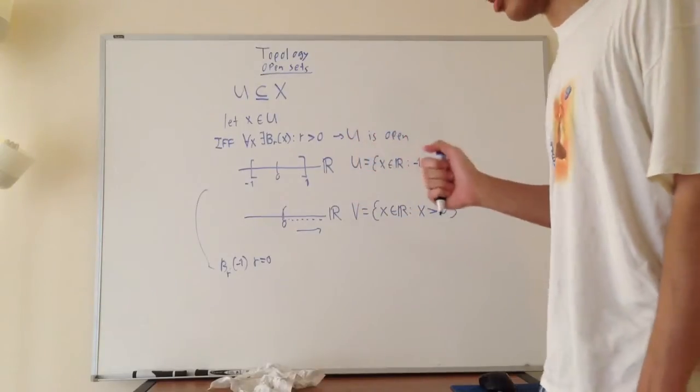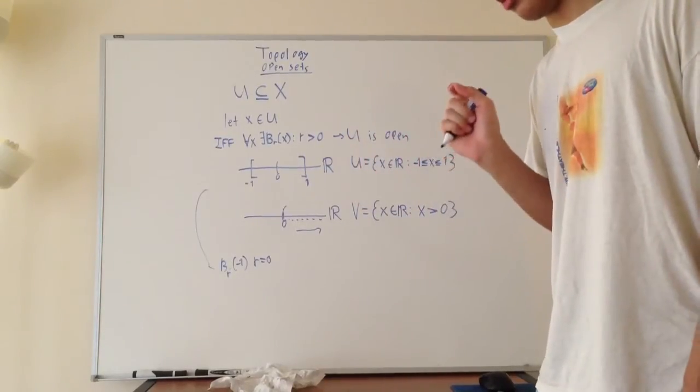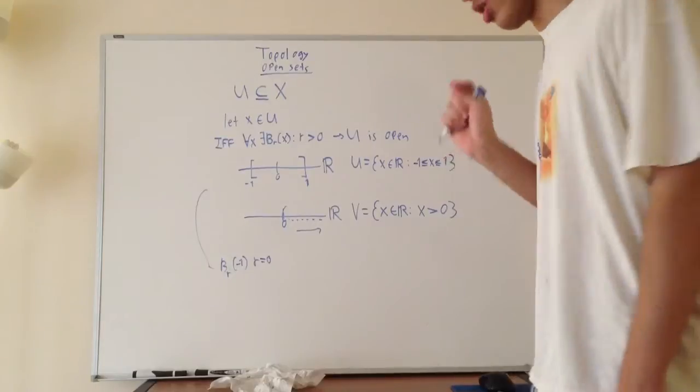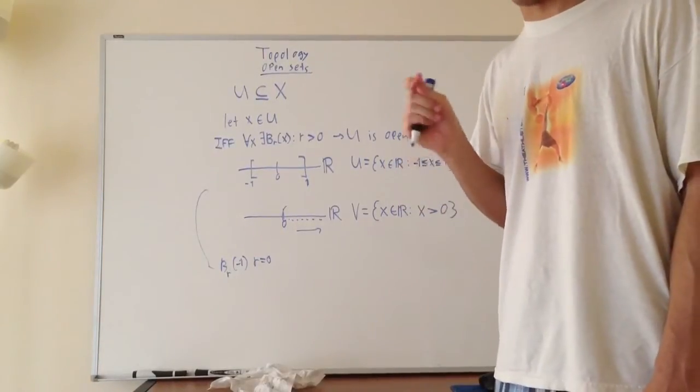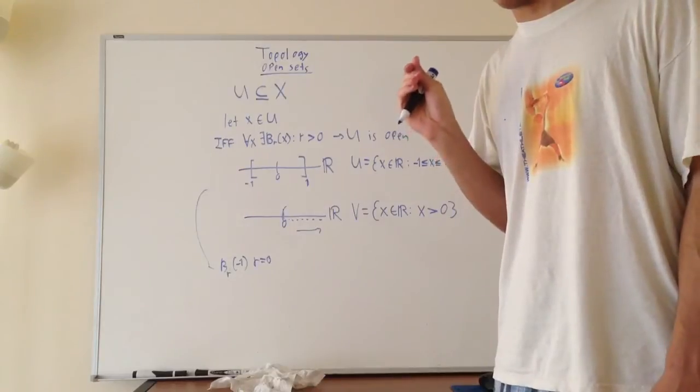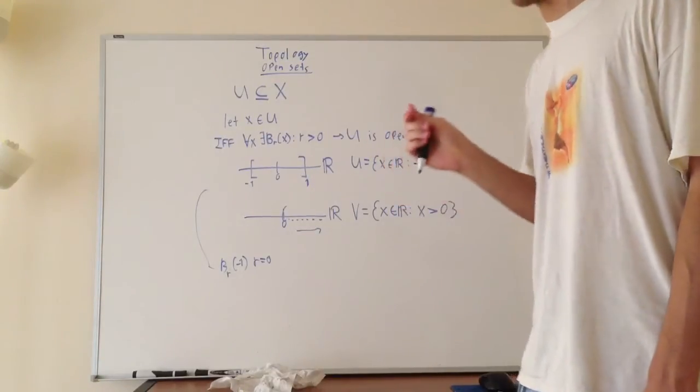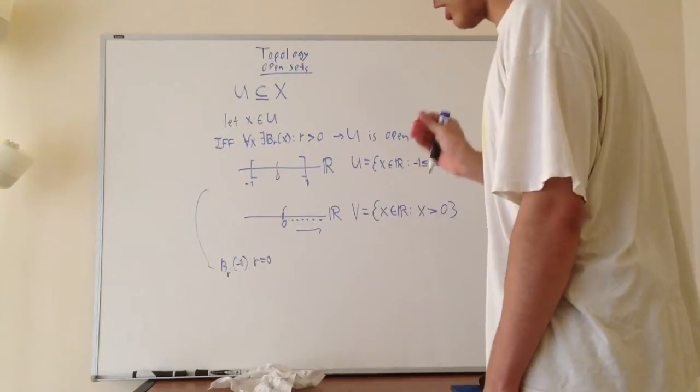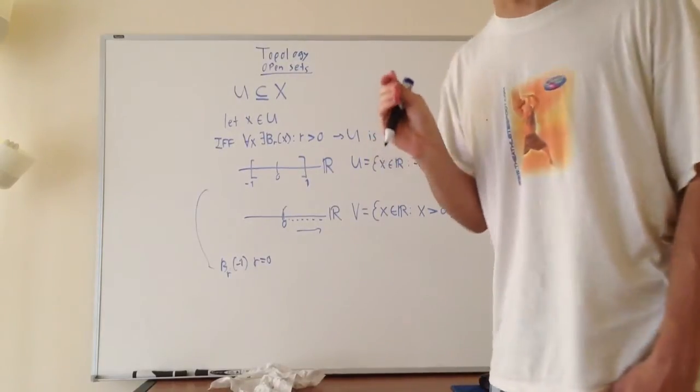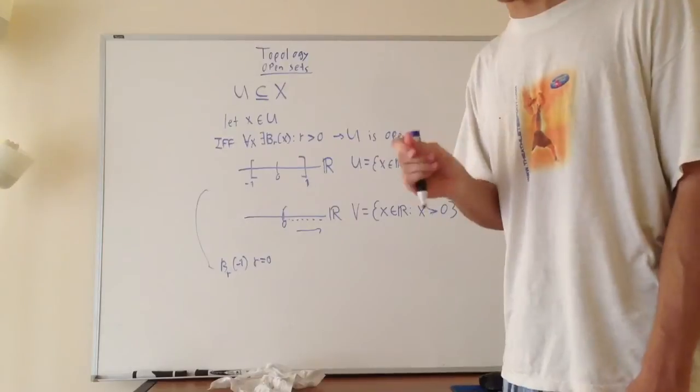Another important note to make here is that the closed set, which I'll get into in other videos, is the complement of the open set. However, there are cases where a set can be neither open nor closed, and sometimes it can be both. So it's important to note that just because a set is not open does not necessarily mean that it's closed. In a lot of cases it is, but not always.